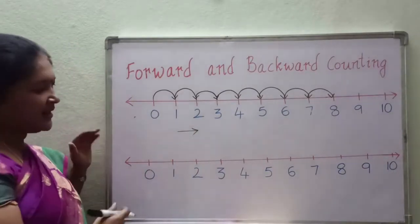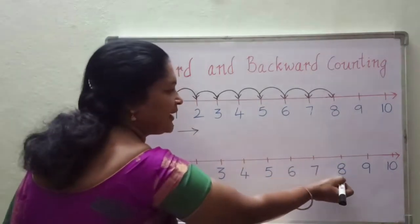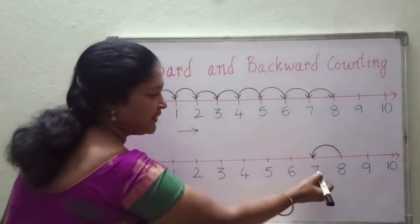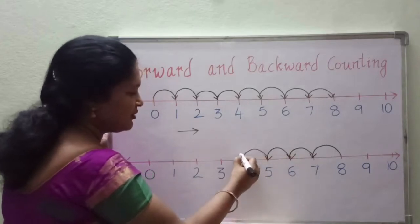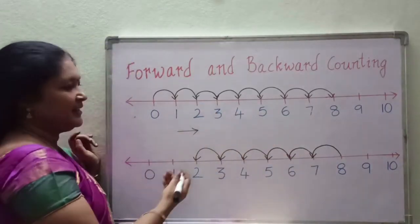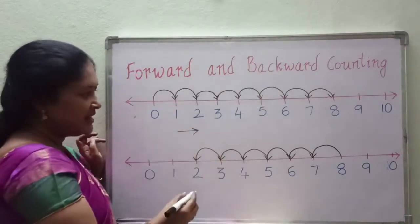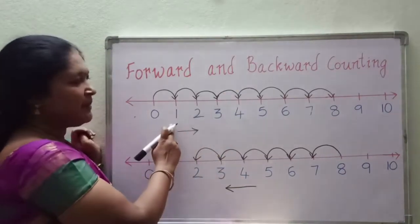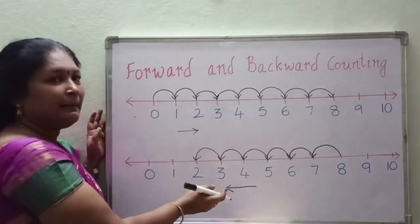So here the numbers will move to the left side — right to left. See children, I am taking one number: 8. So 8 to 7, back side it is moving. 7 to 6, 6 to 5, 5 to 4, 4 to 3, 3 to 2. So here the numbers are moving to the left side — that is called backward counting. If the numbers move to the right side, that is called forward counting. If the numbers move to the left side, that is called backward counting.